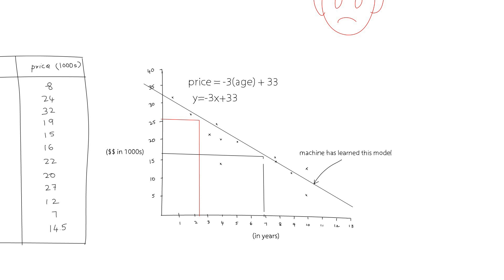How does the computer actually come up with the equation based on this data? Here's how. First, it assumes an arbitrary equation. Then, for that equation, it computes an error term,